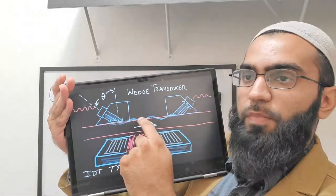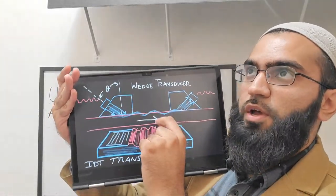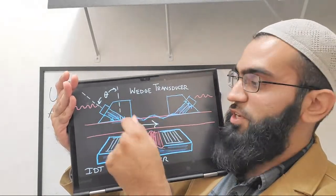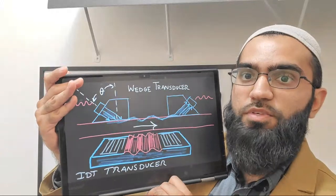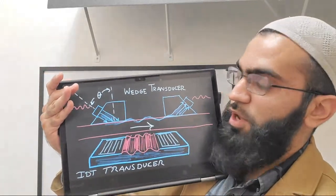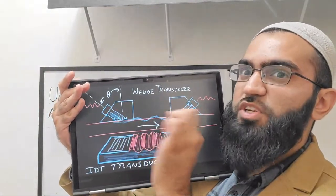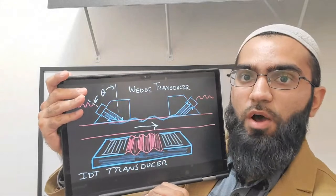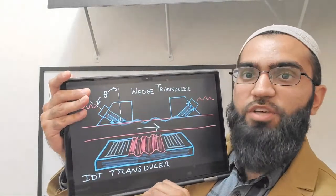If there is a defect, corrosion, or any change in the surface characteristics, the surface acoustic wave would be very susceptible to that and would lose amplitude. Also, if there was any tiny droplet or very small amount of mass on the surface, it would be able to sense that difference from the surface acoustic wave.